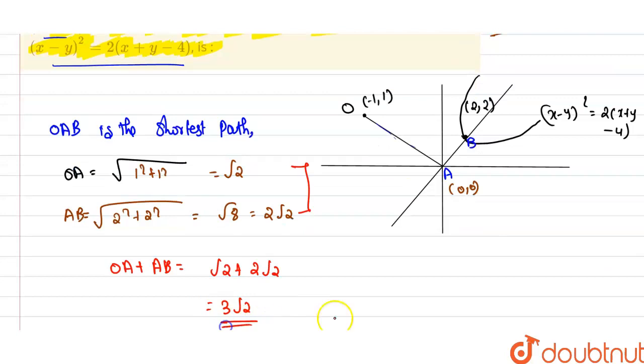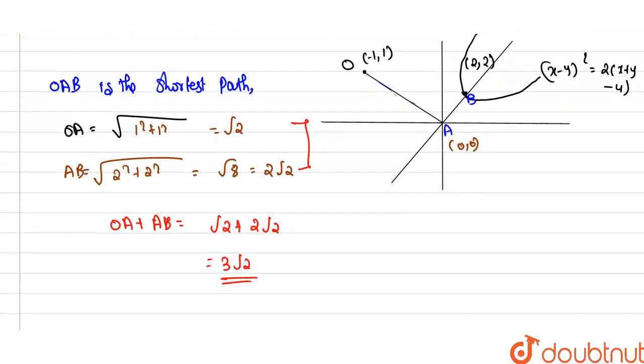So 3√2 is our shortest path length and this is our required answer.